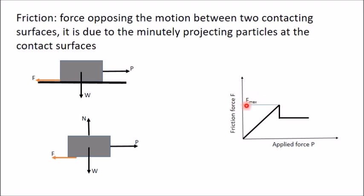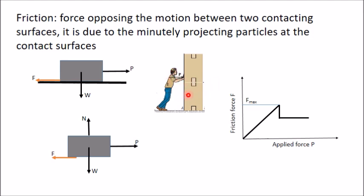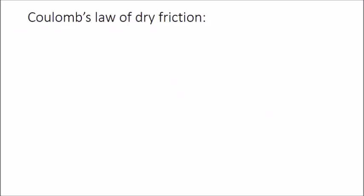This maximum value of friction force is called limiting friction, denoted F_max. You may have experienced this while pushing an almirah — initially you require a greater force to start its movement, but once it starts moving you require lesser force. This is because you first have to overcome the maximum friction force to start movement; once moving, the opposing friction force gets reduced.